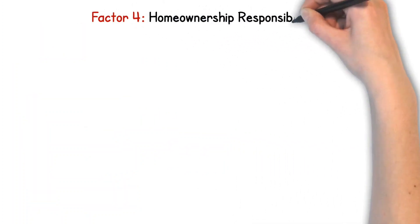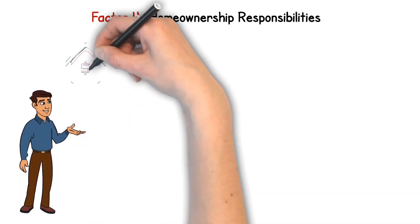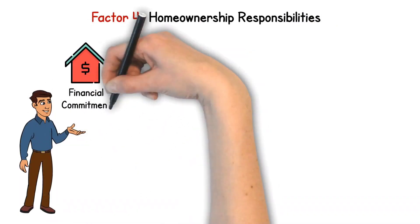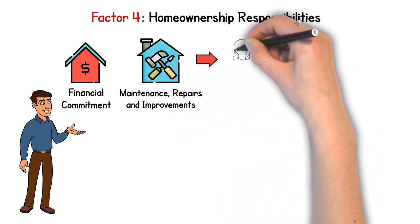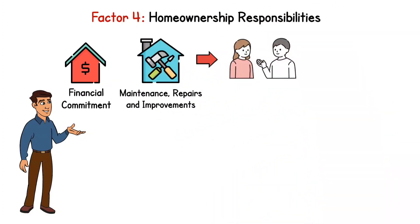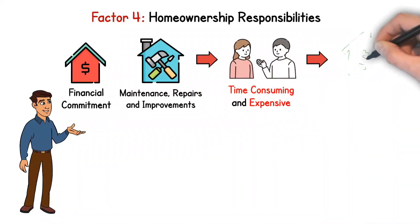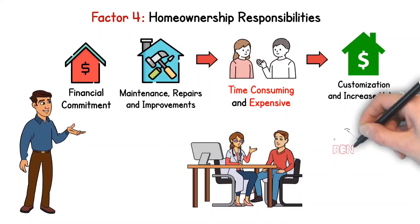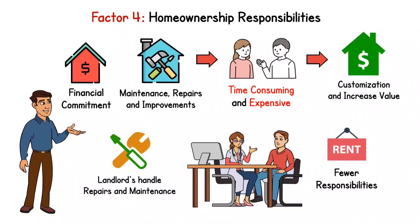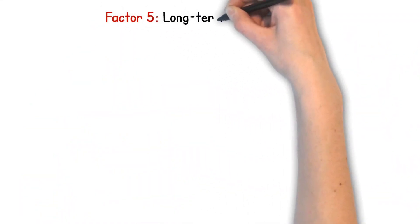Factor 4. Homeownership Responsibilities. Owning a home comes with responsibilities beyond the financial commitment. Maintenance, repairs, and improvements all fall onto the homeowner's shoulders. This can be time-consuming and expensive, but also offers the opportunity for customization and increased property value. Renters, however, generally have fewer responsibilities, as landlords typically handle repairs and maintenance.